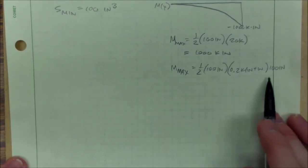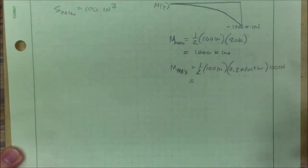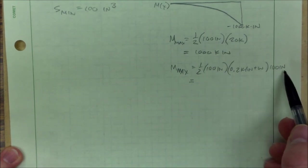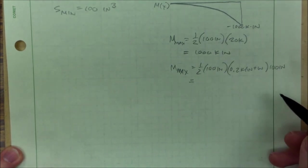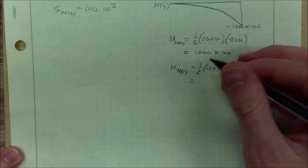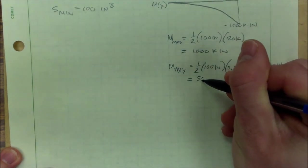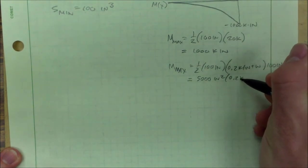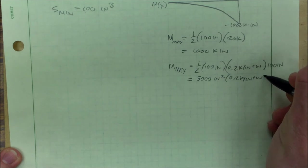Which means our maximum moment equation would change a little bit as well. So 1.5 times 100 inches times our new force, which is 0.2 kip per inch plus w times 100 inches.